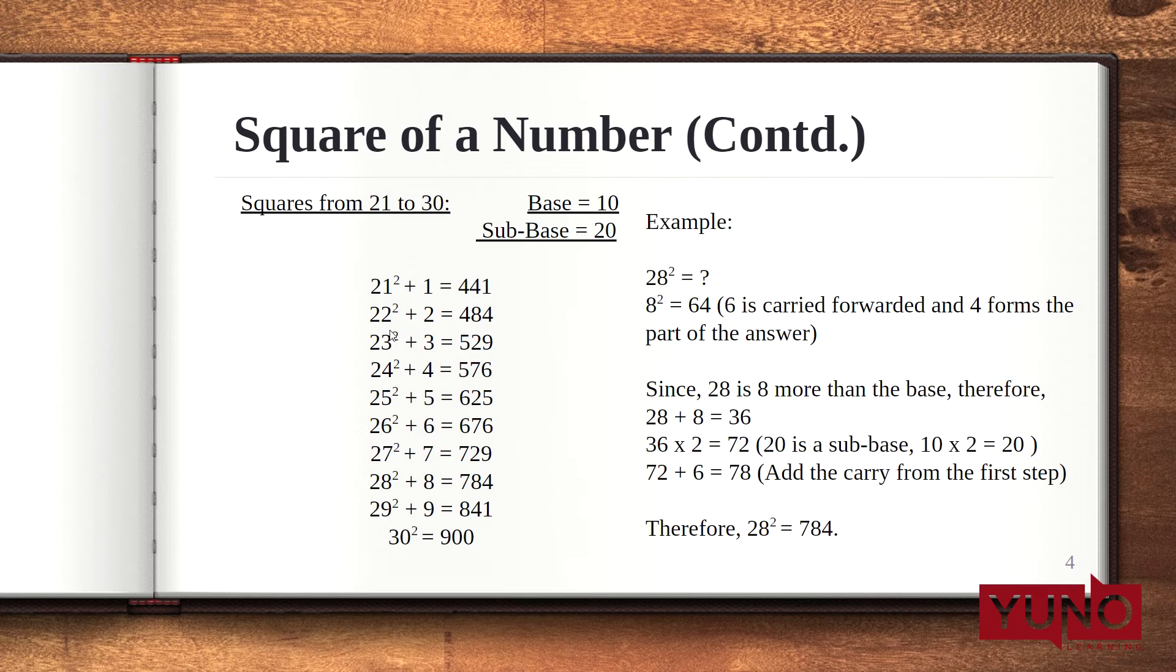Similarly, while calculating the square of 22, the first step remains same to get the square of 2 at the ones place, which is 4. Now, add 22 plus 2. That is 24. Now, 24 will be multiplied with 2 because 20 is a sub base here. 24 into 2 gives 48. So, the square of 22 is 484.